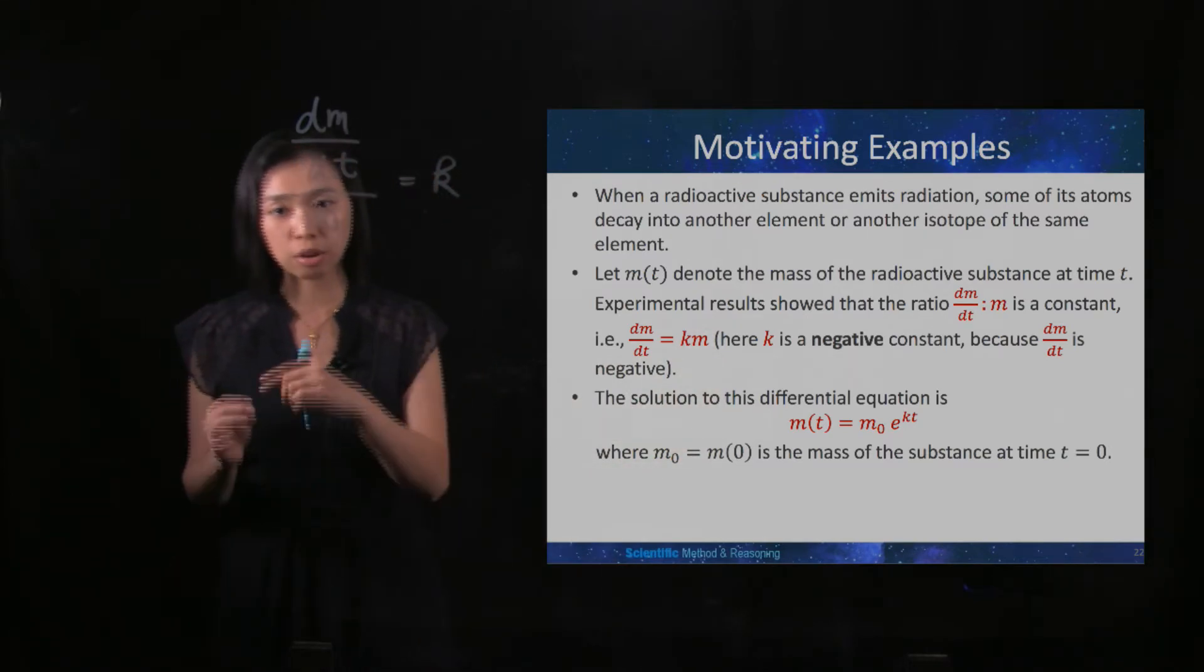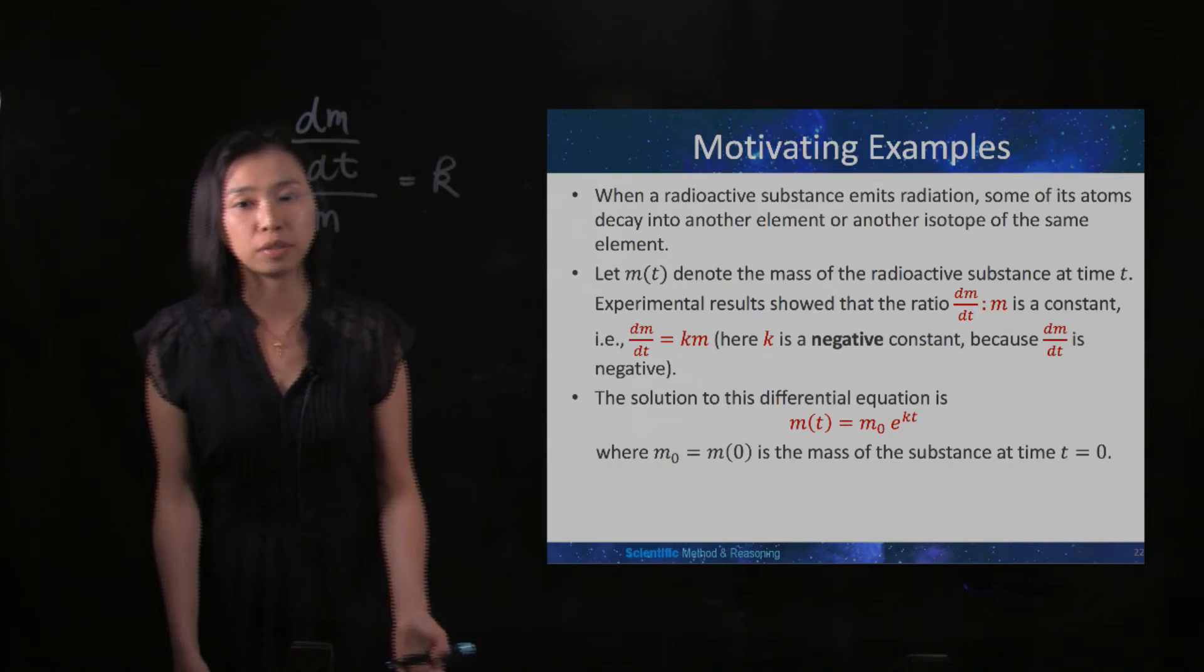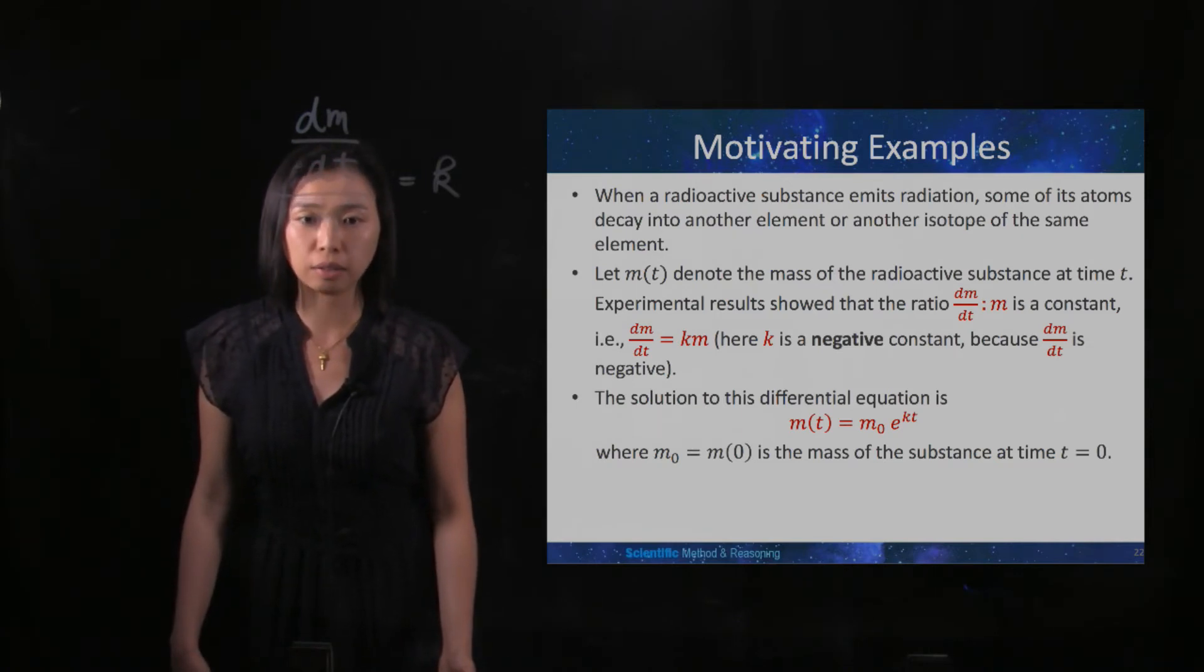We know that the mass is decreasing, and hence we have dm/dt to be negative, so k is negative as well.